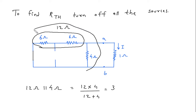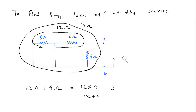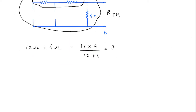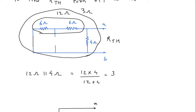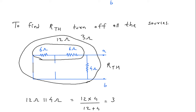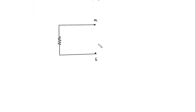This whole combination will be 3 ohm, and this is Rth. So Rth will look like this — terminal A, terminal B — with value 3 ohm. Therefore Rth is equal to 3 ohm.